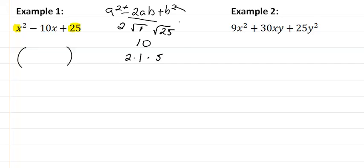This is kind of my scratch work here. So we're going to put a square on the outside. We bring down this sign here, which is negative. The square root of the first term is x, the square root of the last term is 5, and we are done.